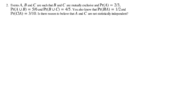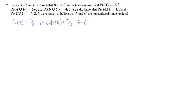We're going to solve question two in the conditional probability section. We're given all sorts of information and it's best to identify all the important information and write it out. We have three events A, B and C. We are given that the probability of A is equal to two-thirds, the probability of A or B is equal to five-sixths, and the probability of B or C is equal to four-fifths.